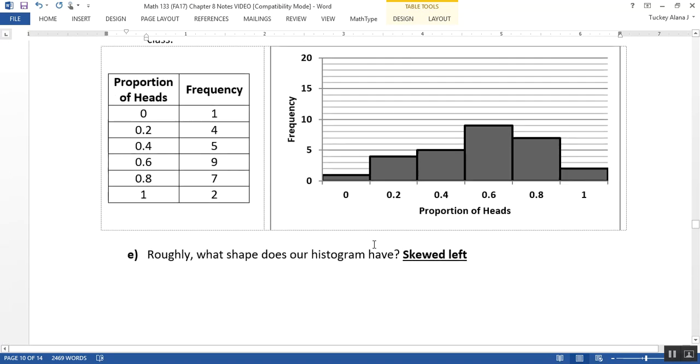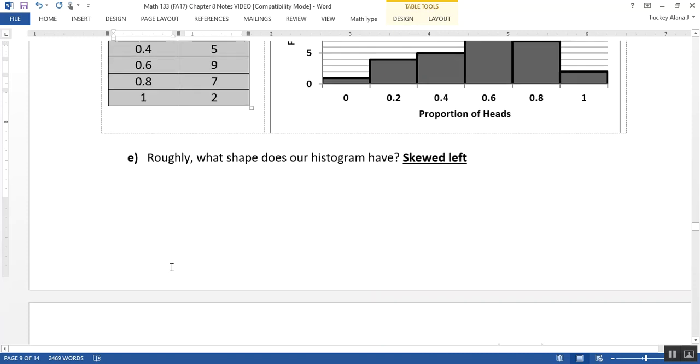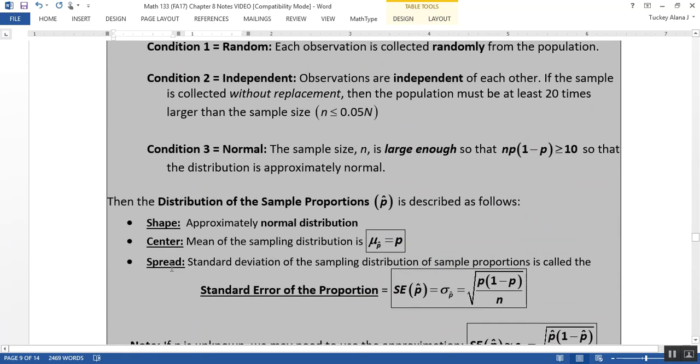For example, if I go back here, I see that I have one at 0, four at 0.2, five at 0.4, and so on. But if I average them all out, I should be right around 0.5 for my mean. The mean of all these different p hats should be p, which is 0.5.